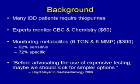A newer monitoring strategy using thiopurine metabolites — the 6TGN and the 6MMP — is being used more frequently, as this is readily available, does not require expert interpretation, and is easily reproducible. However, these cost $300 and take 2–5 days to come back. A recent meta-analysis shows that thiopurine metabolites are only 62% sensitive and 72% specific for clinical response. Therefore, as Lloyd Mayer said in his recent Gastro 2006 paper, before advocating the use of expensive tests, maybe we should look for simpler options.